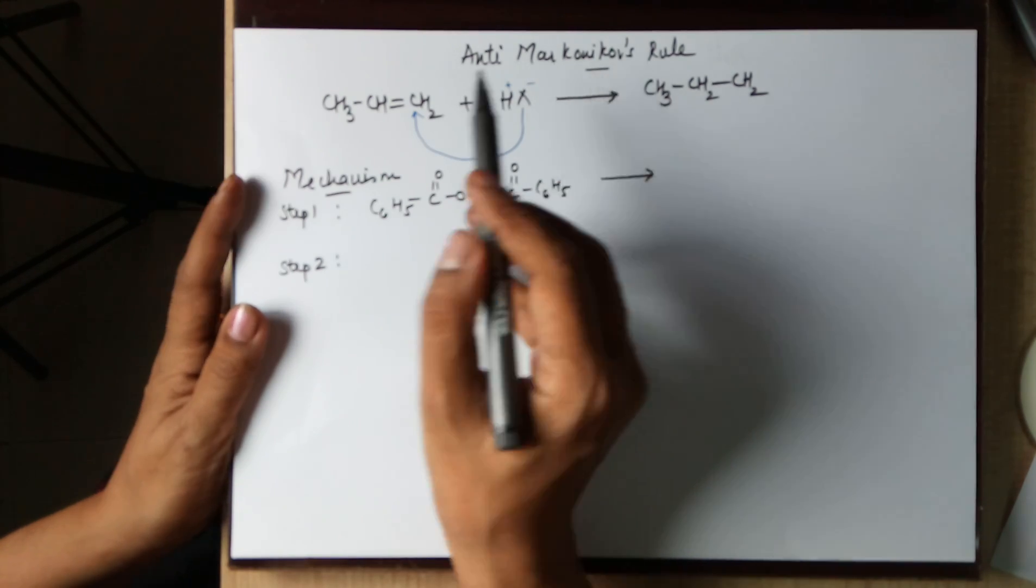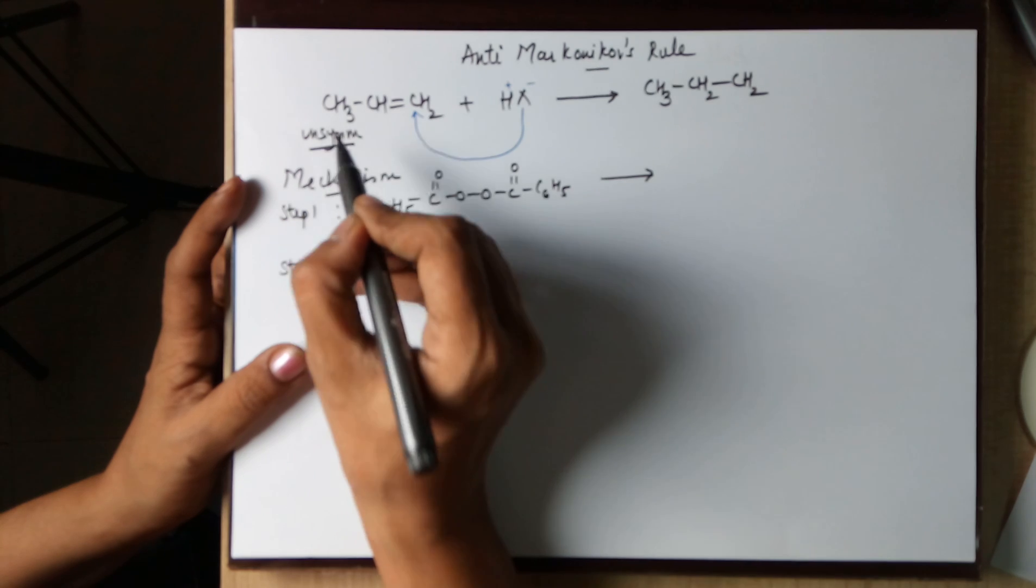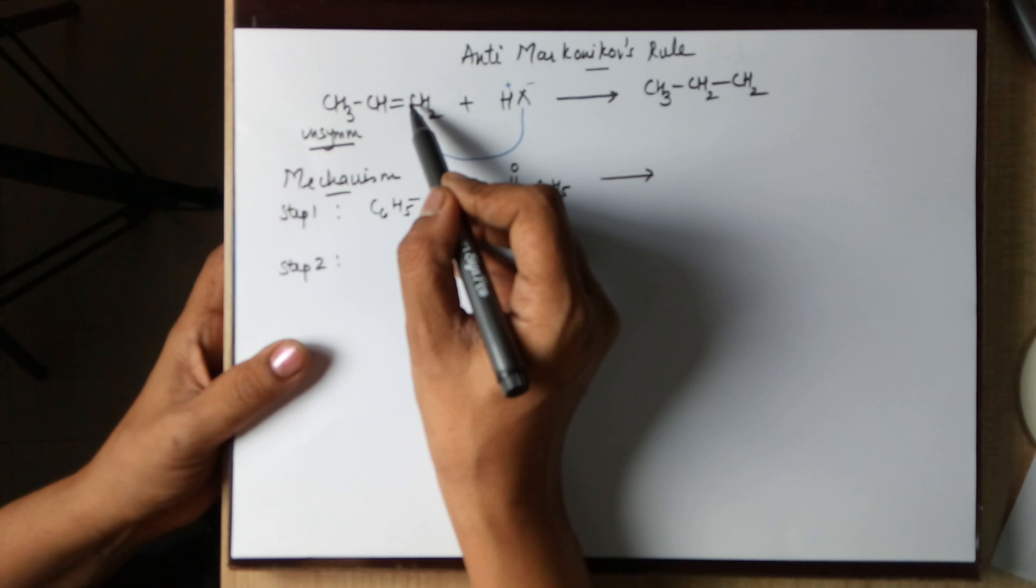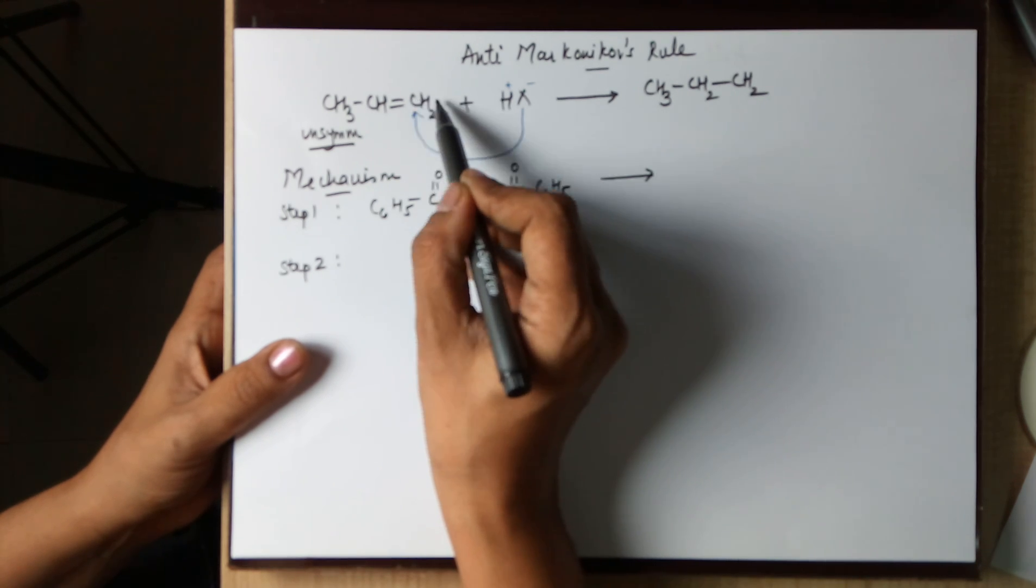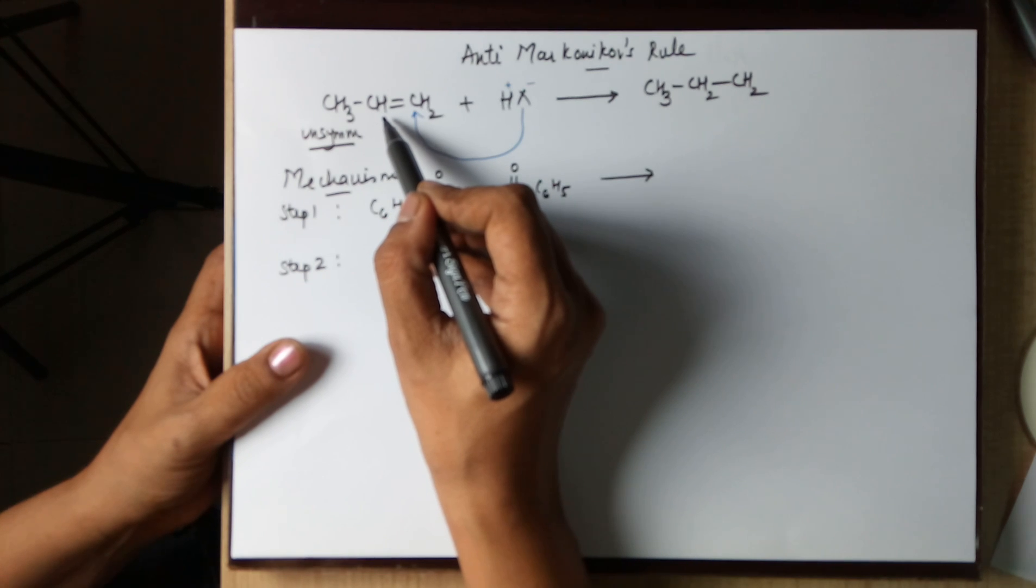In an anti-Markovnikov's rule you again take an unsymmetrical alkene. The word unsymmetrical means the double bonded carbons should have different number of hydrogens. This has got two hydrogens directly attached to it. This has got just one hydrogen directly attached to it.